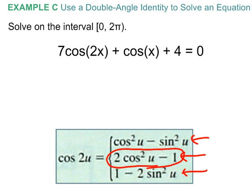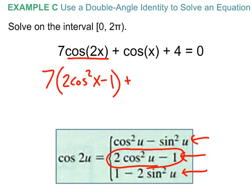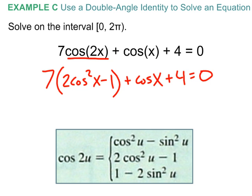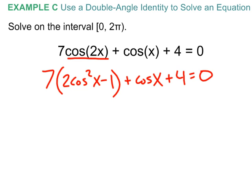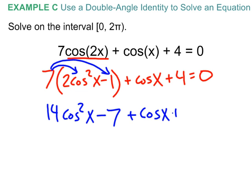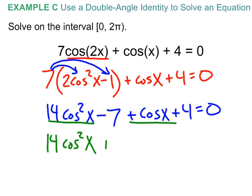Remember the parentheses. I'm going to replace cosine of 2x with two cosine squared of x minus one, keep the parentheses, put the 7 on the outside, plus cosine of x plus 4. Let's make this 14 cosine squared of x minus 7. Don't forget — you're distributing; this is multiplication. Combine like terms and put it in our familiar quadratic standard form: the squared term first, followed by the linear term, just cosine of x, and then minus 7 plus 4, which is minus 3.